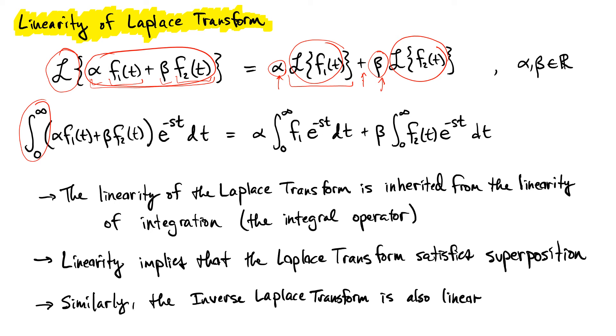In this case, you should already know that if we have this quantity subbed into our definition of our Laplace transform, we can go ahead and multiply through this exponential to both of these terms, and that allows us to separate them into two separate integrals. And then these scalar factors can also be pulled out in front of the integral.